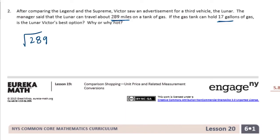So 17 can't go into 2, and it can go into 28 one time. Get 11, bring down the 9.